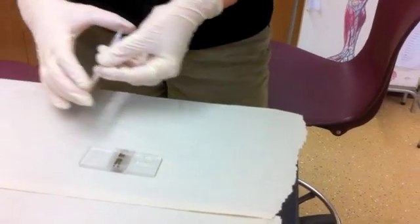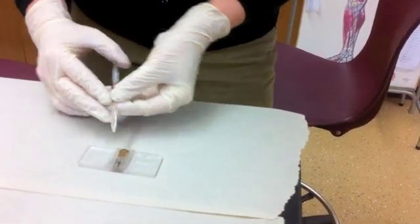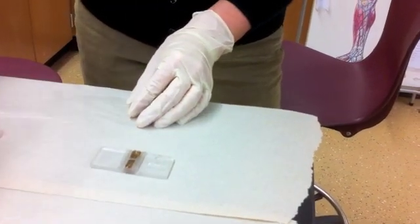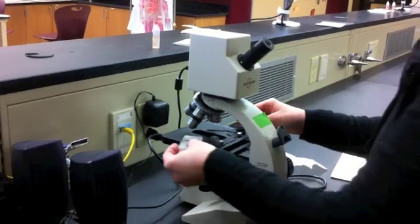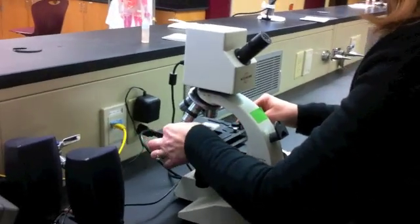The mixture is dispensed onto a hemocytometer. The hemocytometer contains a grid with a fixed volume etched into its surface.